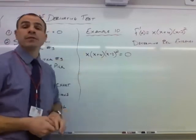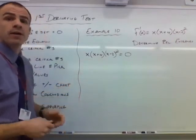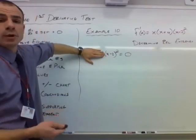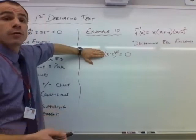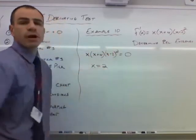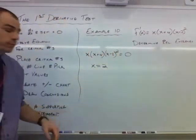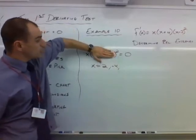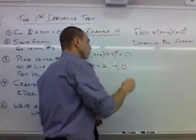We need to figure out when this derivative equals zero. We've got a product equal to zero, so we cover up factors one at a time. Covering the first two, we get (x−2)² = 0, giving x = 2. Covering the first and last, we get x+4 = 0, giving x = −4. Covering the last two, we get x = 0. Those are our three critical numbers: x = −4, x = 0, and x = 2.